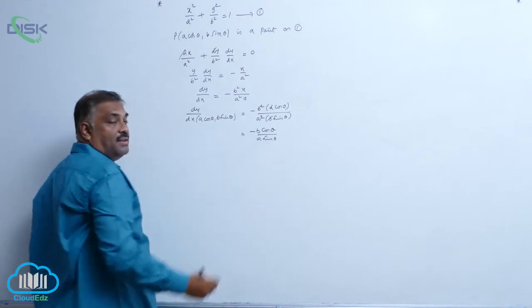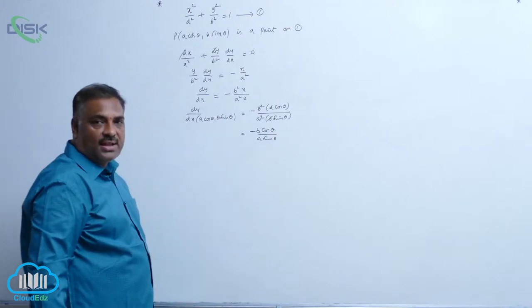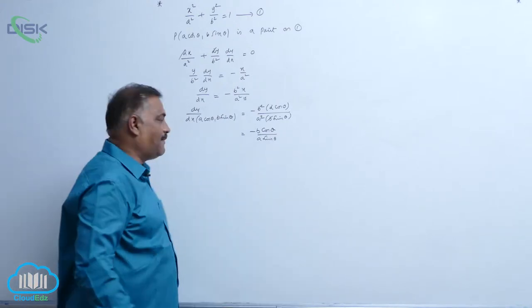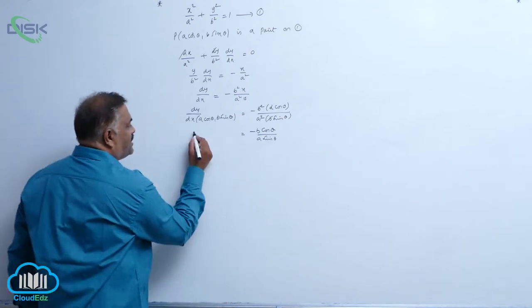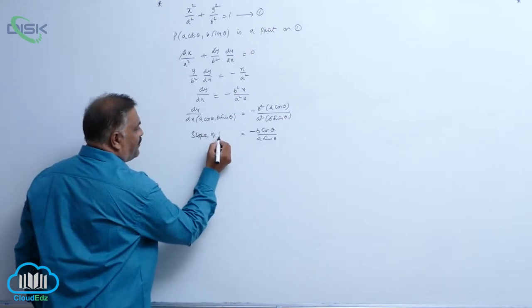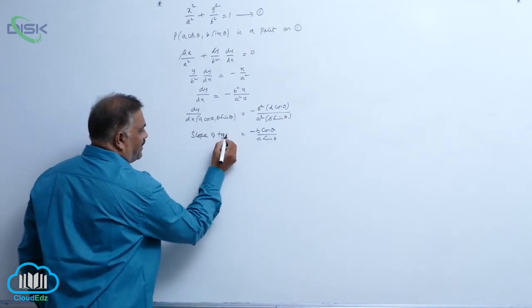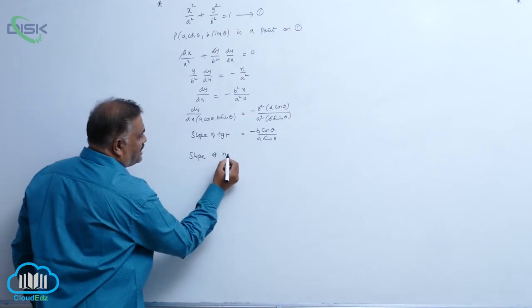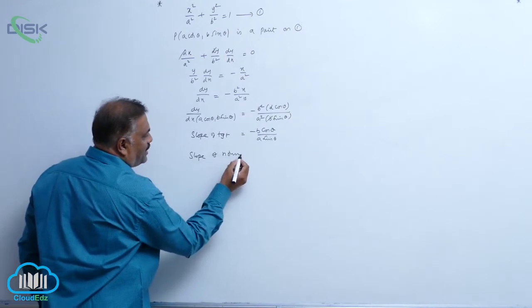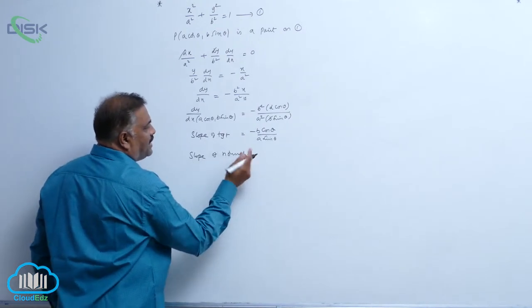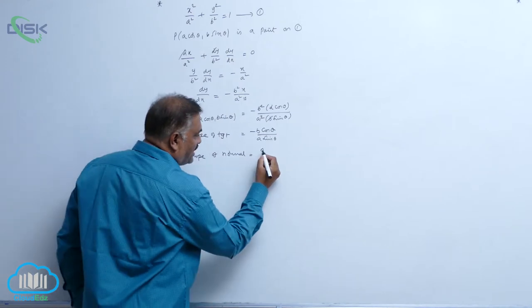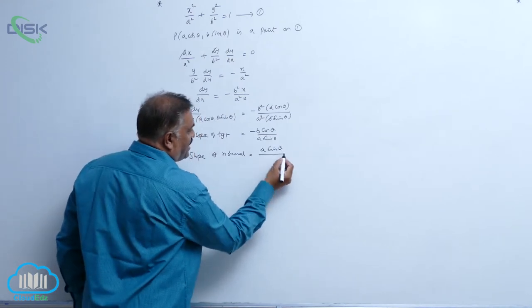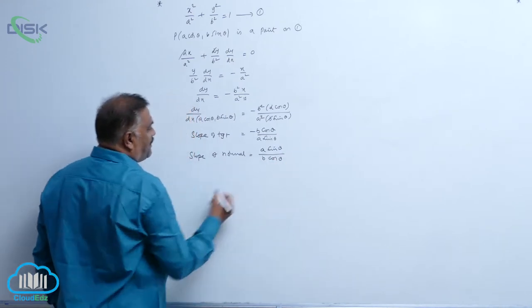Remember, this is the slope of the tangent, whereas we require the slope of the normal. The slope of the normal is exactly the negative of the reciprocal, which is a sin θ by b cos θ.